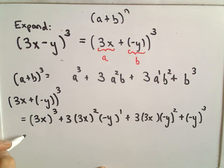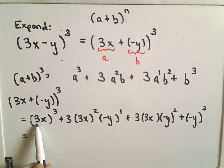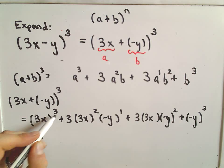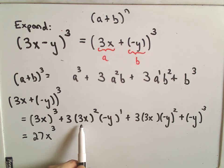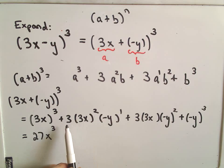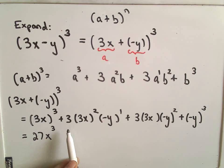So now it's just a matter of cleaning things up. So 3 cubed is going to be 27, x cubed is just x cubed. Notice, okay, so order of operations, we have to square first. So 3 squared is 9, times another 3 is going to be 27.